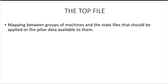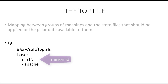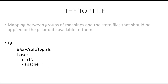Next we have the top file. As we said earlier, we can define what pillar and state files a particular minion has. This mapping is usually present in the top file. Here is an example. The name of the top file is top.sls. It is present at /srv/salt. So to classify my state files, I'll have the top file in the same folder. Next I have my category 'base'. In that, the minion having ID 'min1' should have the apache.sls file. As you can see in the name, I have removed the extension .sls.